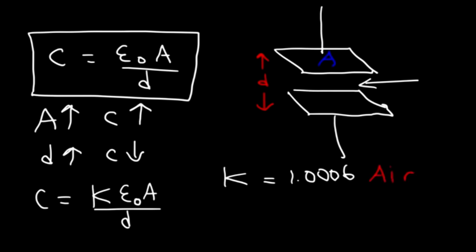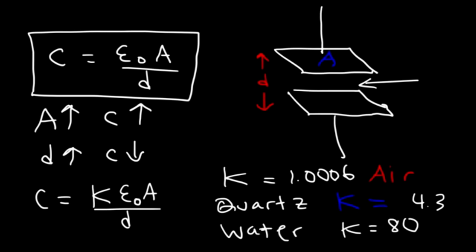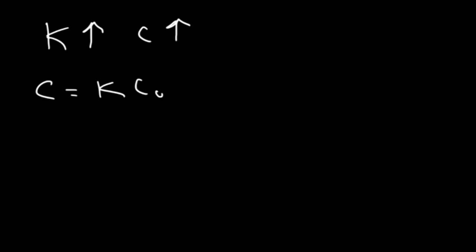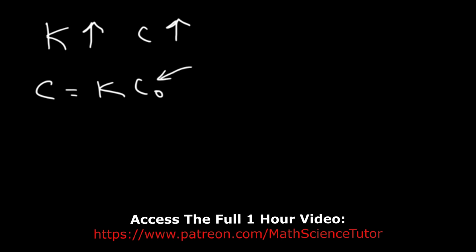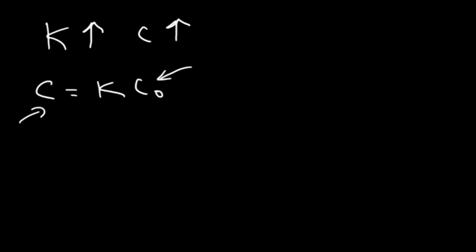For other substances, K will increase. For example, for quartz, K is about 4.3. In the case of water, K is about 80. As you increase K, the capacitance will increase, so it's very useful to use a dielectric — you can store more charge per volt. C is equal to K times C sub-naught, where C sub-naught is the original capacitance without a dielectric and C is the capacitance with the dielectric. Anytime you add a dielectric, the capacitance will go up. However, the voltage will go down: V equals the original voltage divided by K.